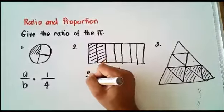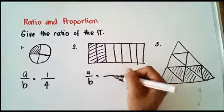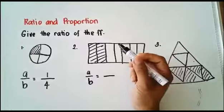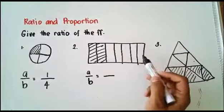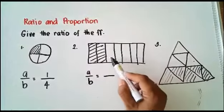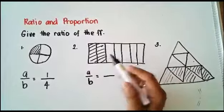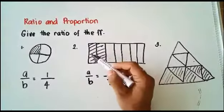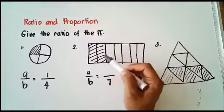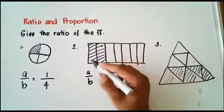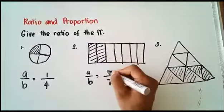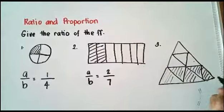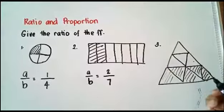A over B is equal to: our B is the total number of divisions in an object. We have 1, 2, 3, 4, 5, 6, 7 — so we have 7. And our shaded portion is 1, 2 — so 2. Therefore, our ratio here is 2 over 7.